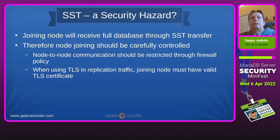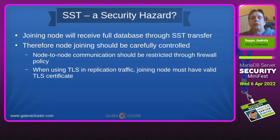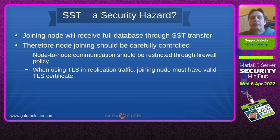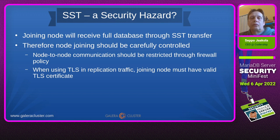The final topic is about SST as a security hazard. A joining node — anyone who has network access — can send an SST request to one of the nodes, and if served, will receive the full database contents. This can be mitigated first through network topologies: with proper firewalling you can control who has access to the donor node in the cluster. And if you have TLS configured, the X.509 certificates act as a shared secret — if an intruder does not have access to the certificate, they cannot join.